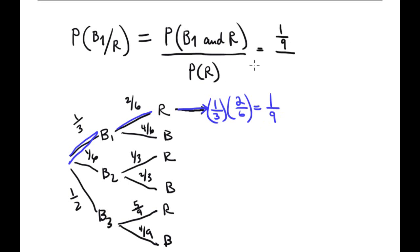The denominator is 4 over 9, computed in the first question. So the answer is 1 over 9 divided by 4 over 9.